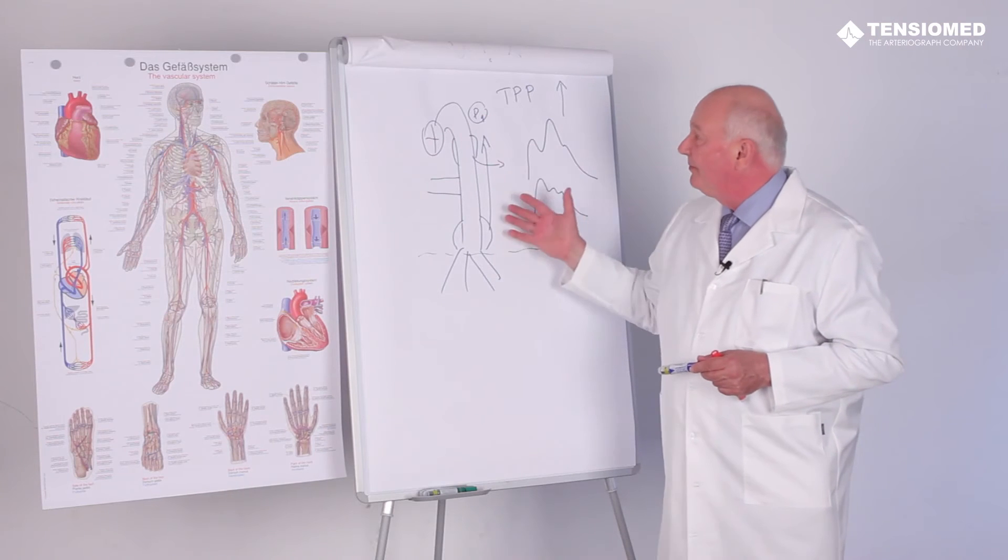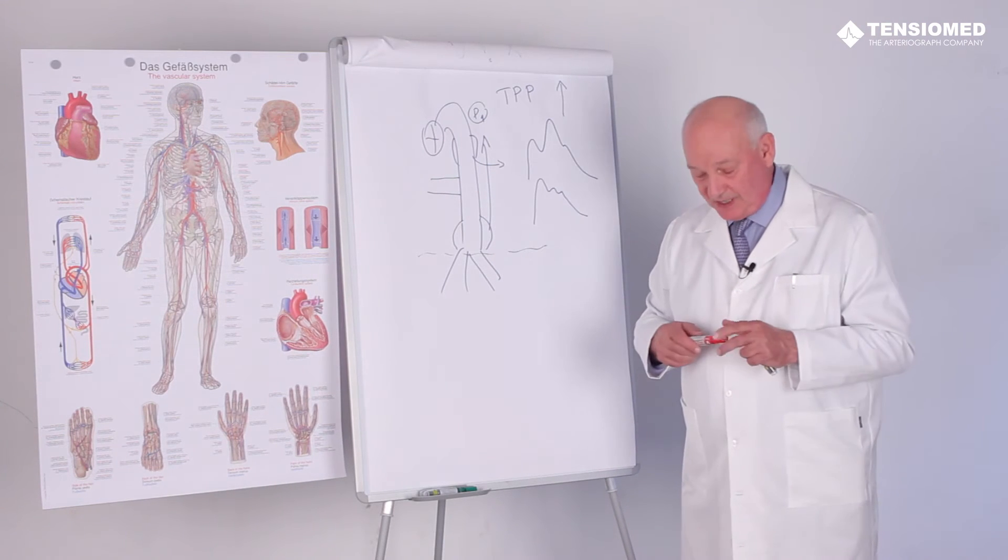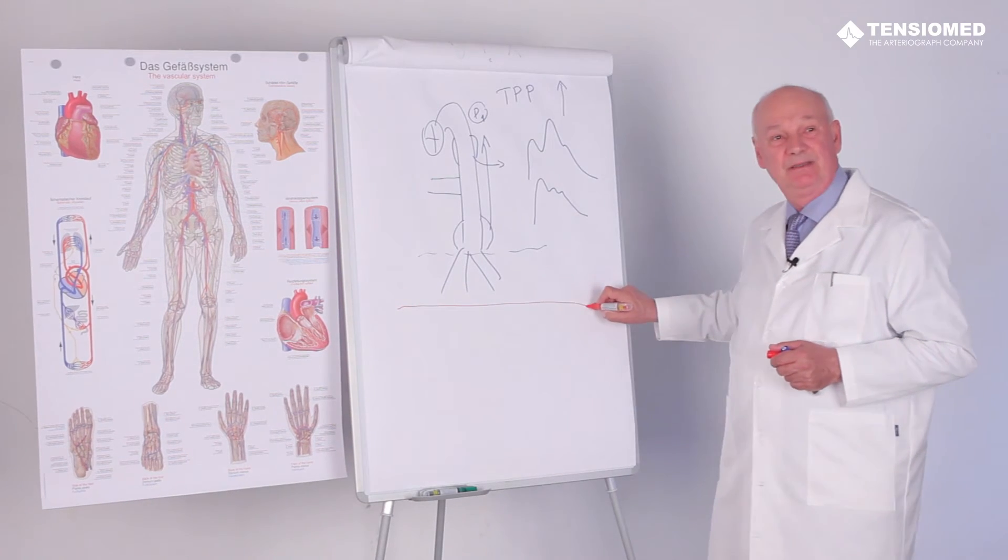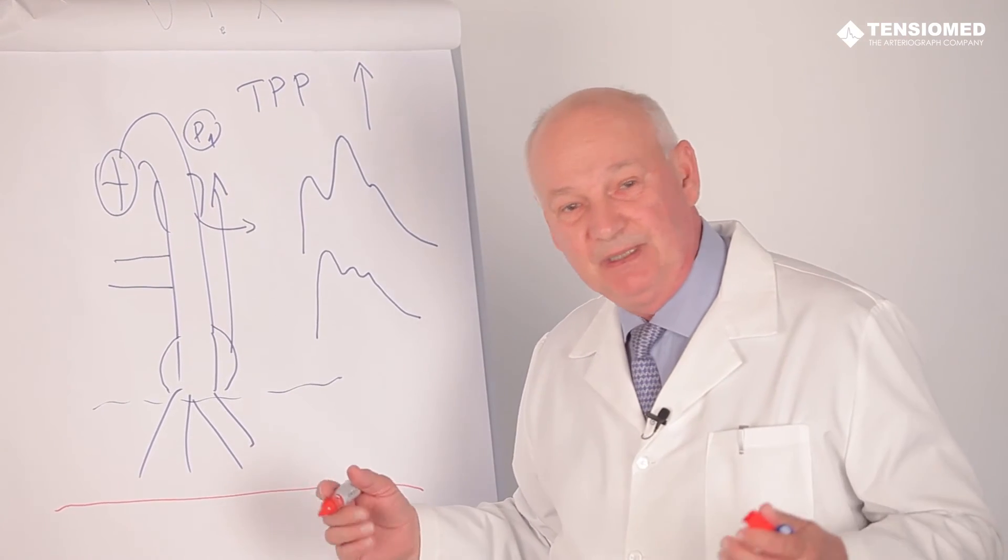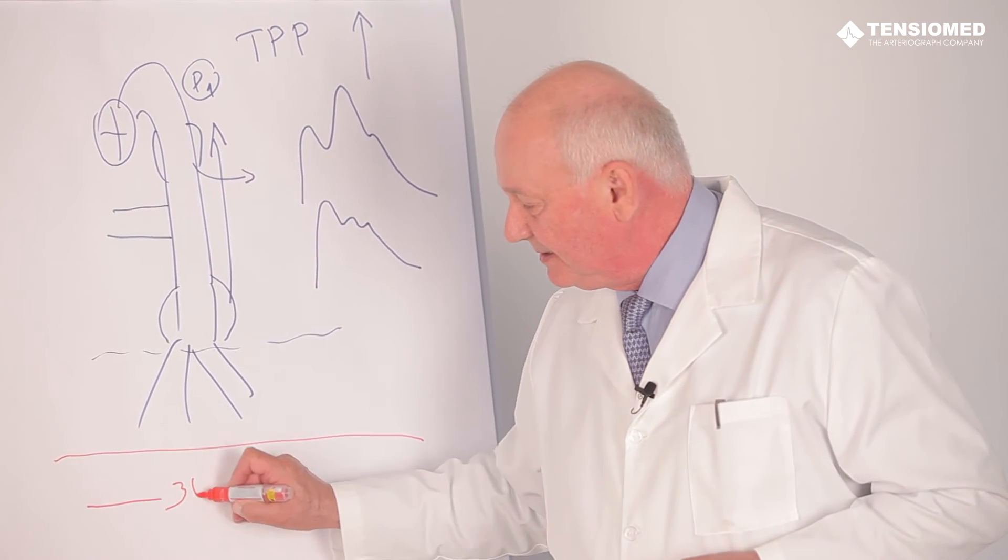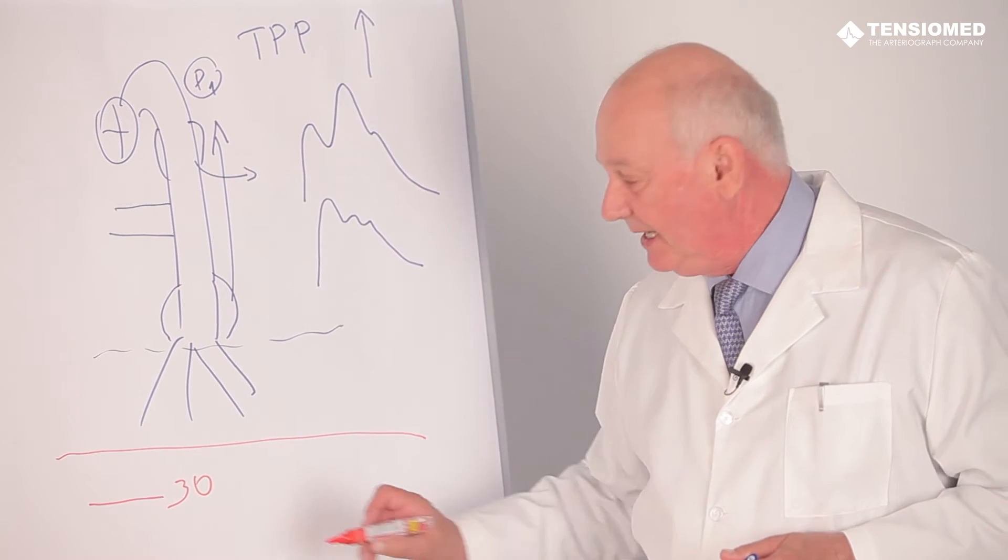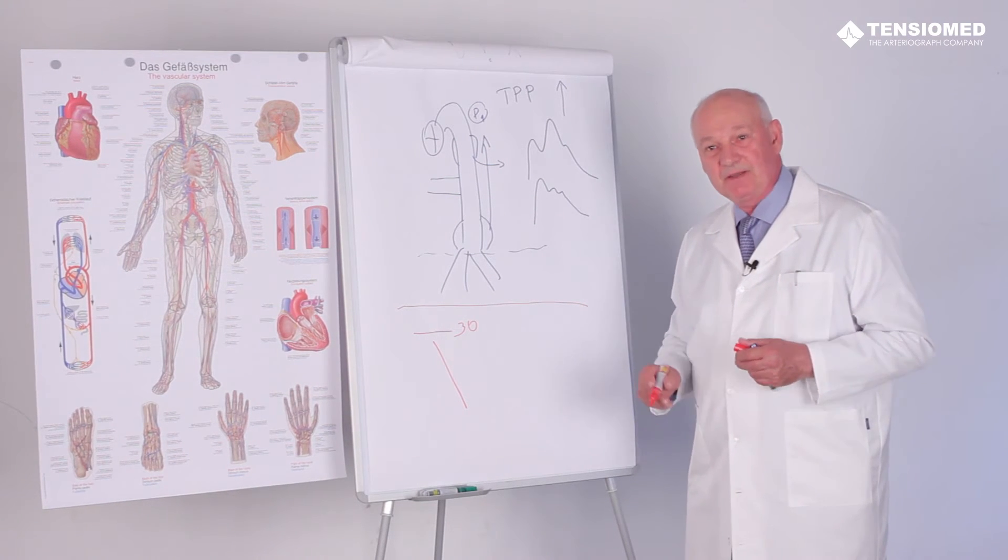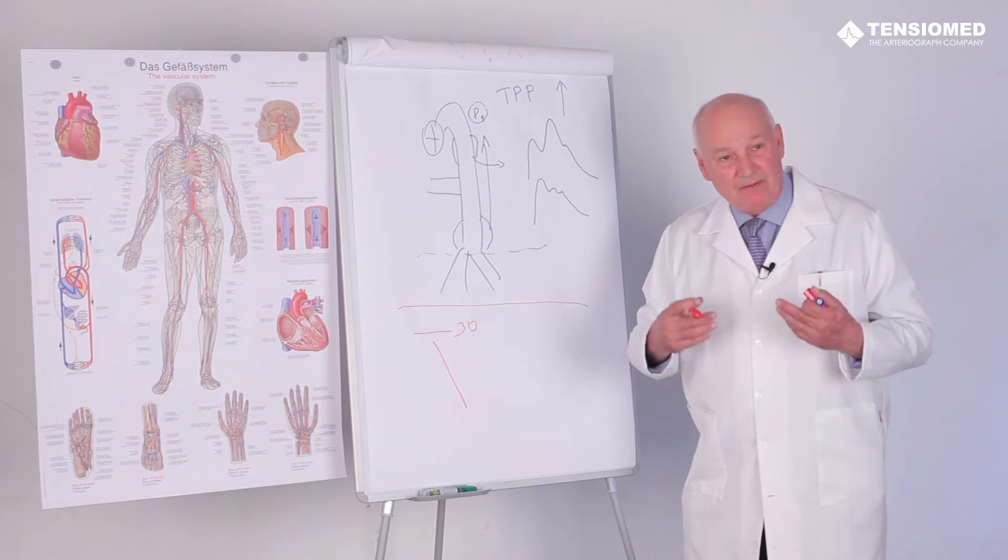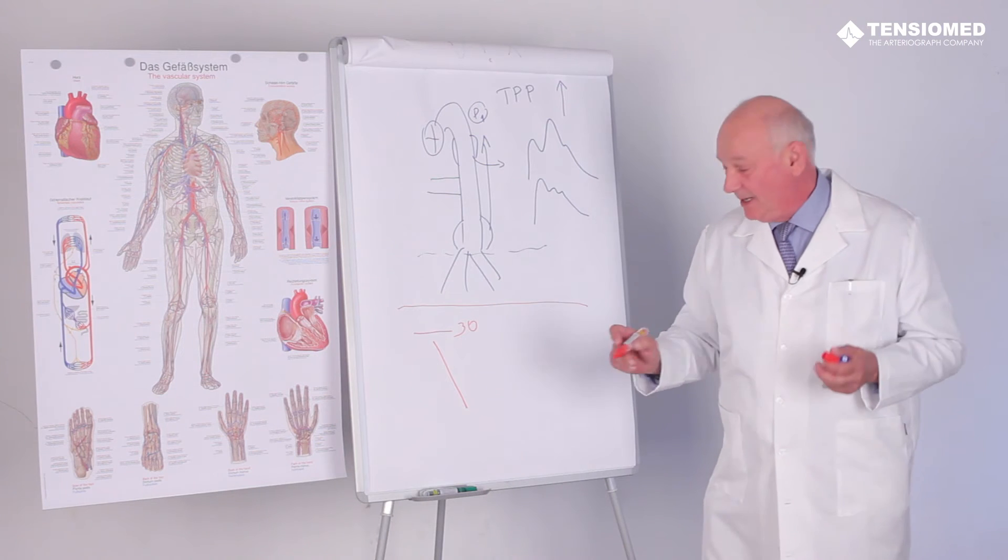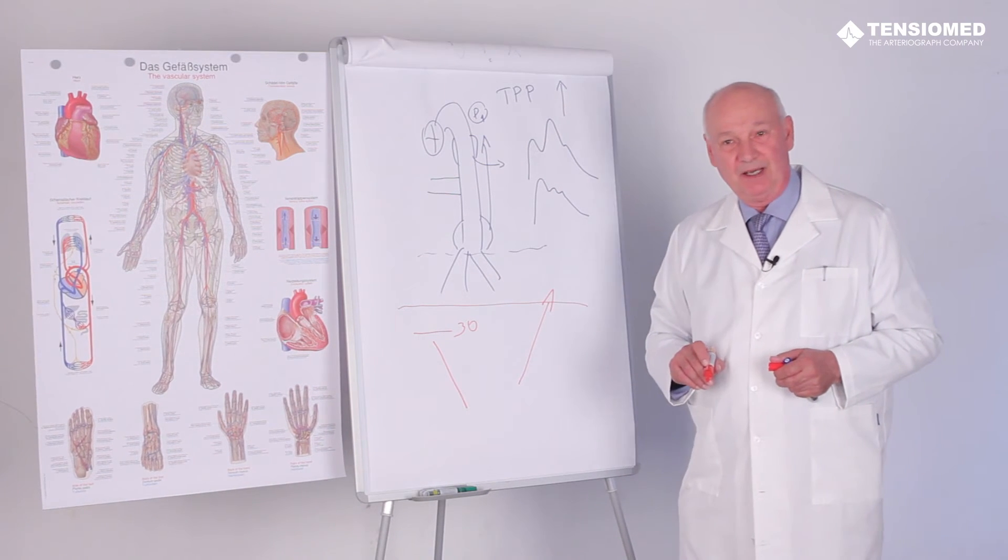This kind of augmentation index change can happen very quickly. For instance, if you eat a normal food, after 30 minutes of food intake, there is a drop or decrease in the augmentation index because of the visceral vasodilation. On the contrary, if you smoke a cigar, the augmentation index is getting to be higher.